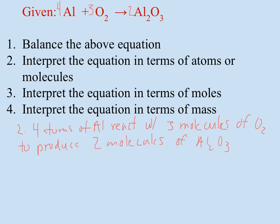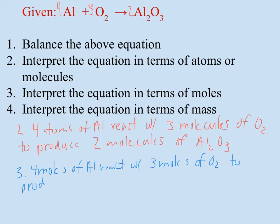Number three says interpret the equation in terms of moles. In terms of moles it's not going to change a lot, because a mole is just a whole bunch of atoms or molecules at once. So this is really telling me: four moles of aluminum react with three moles of oxygen to produce two moles of aluminum oxide.